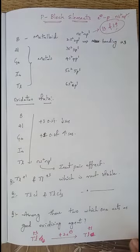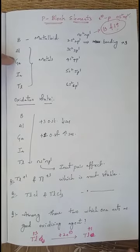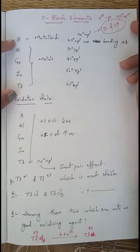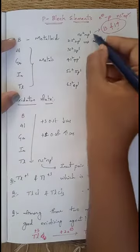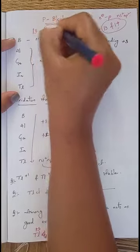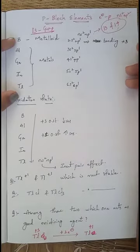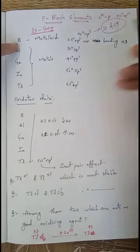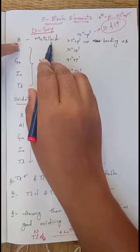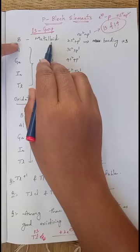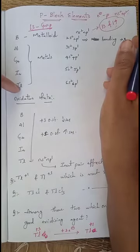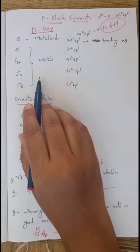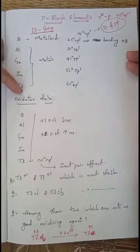Five elements are present in the 13th group: boron, aluminium, gallium, indium, and thallium. Boron is a metalloid because it has both metallic and non-metallic properties. Aluminium, gallium, indium, and thallium all have only metallic properties, so they are completely metals. The first one is a metalloid and the remaining all are metals.